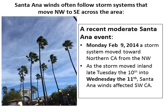Speaking of low pressure systems moving east of us, Santa Ana winds typically follow when a storm system moves from the northwest to southeast across California. A good example of this occurred recently. On Monday, February 9, a storm system moved toward northern California from the northwest. This storm delivered plenty of rain to the northern part of the state but was not particularly cold. However, as the storm moved inland late Tuesday into Wednesday, February 11, Santa Ana winds picked up over the area. Let's take a closer look at that now.